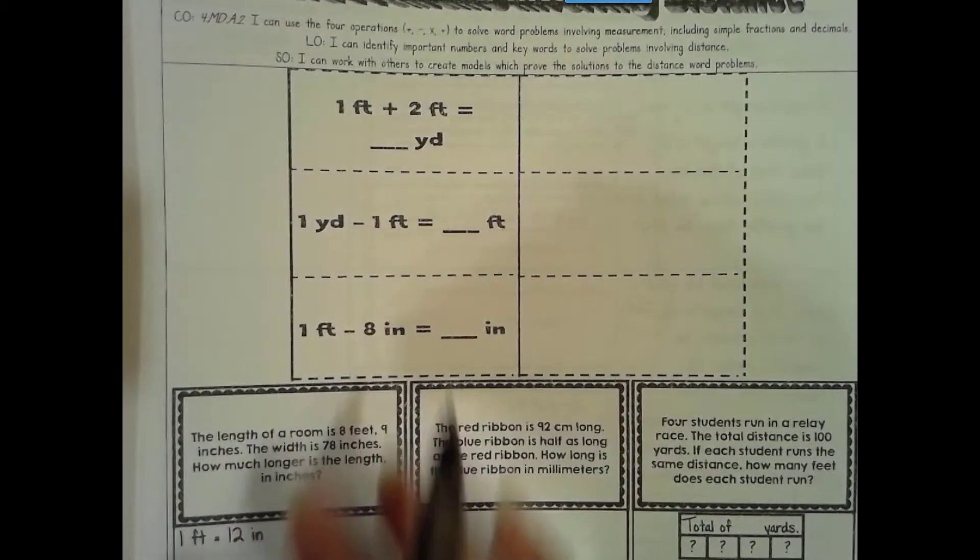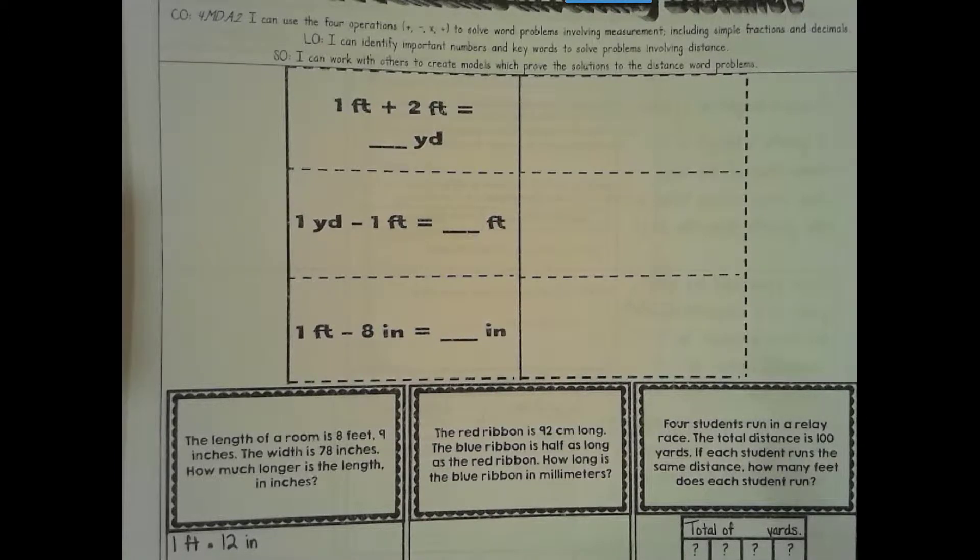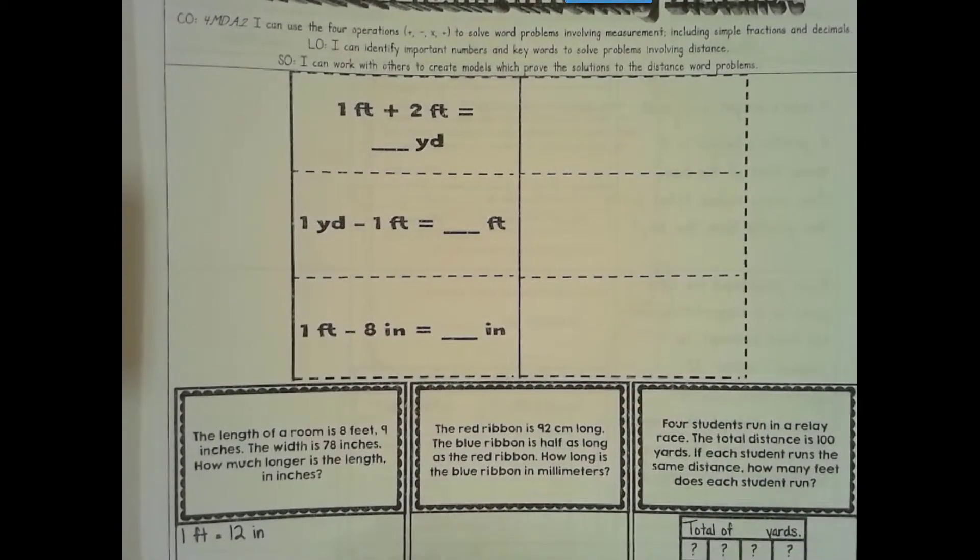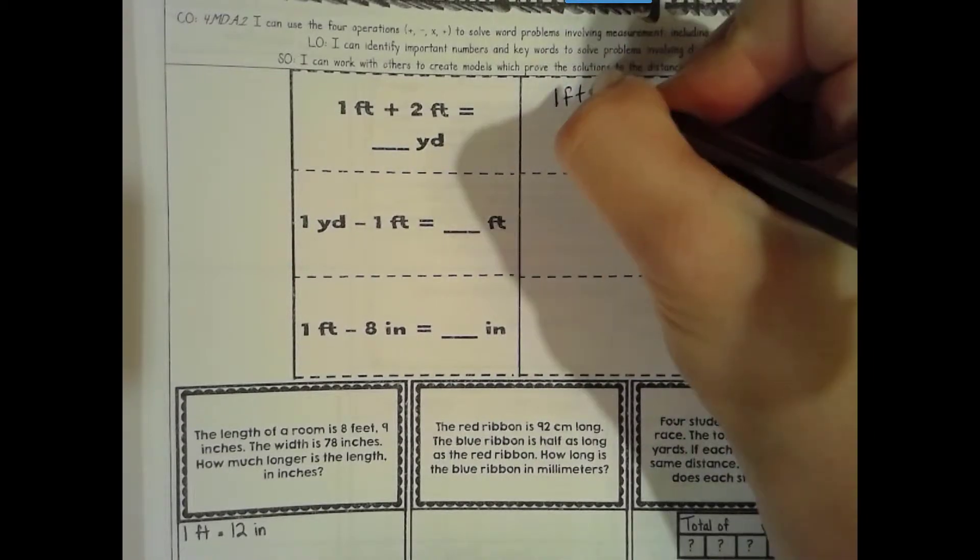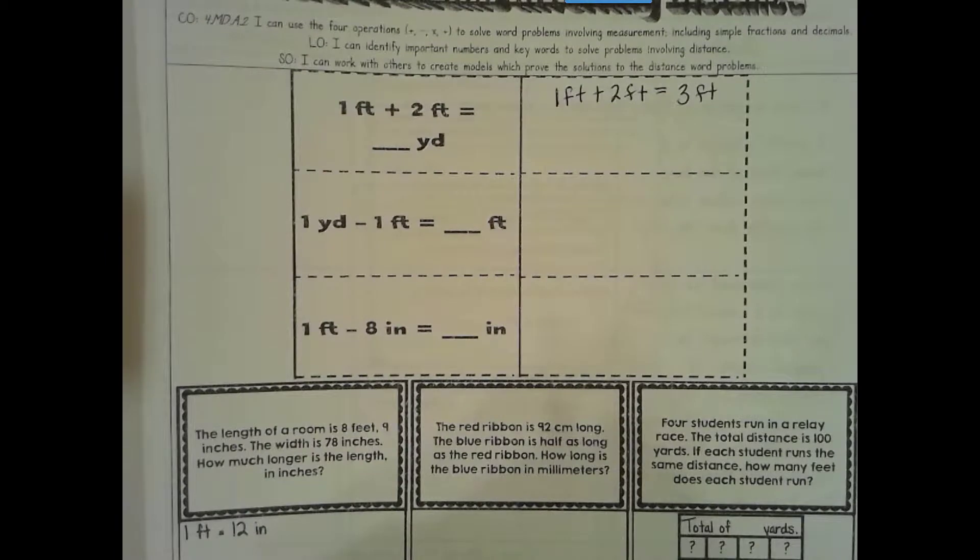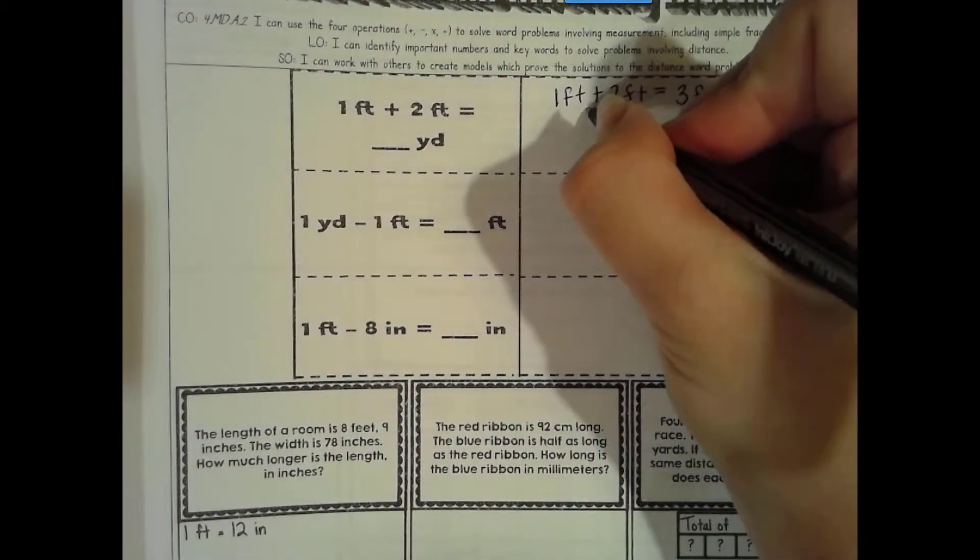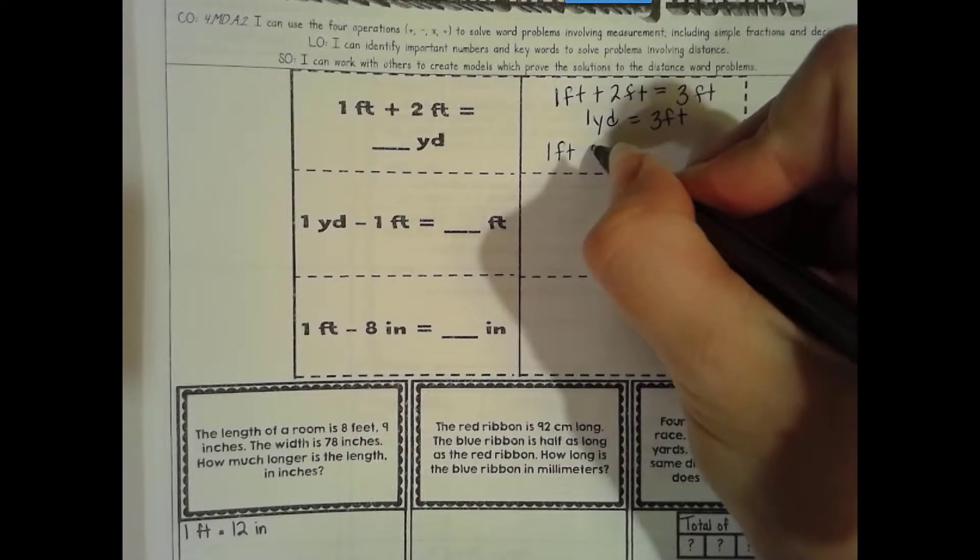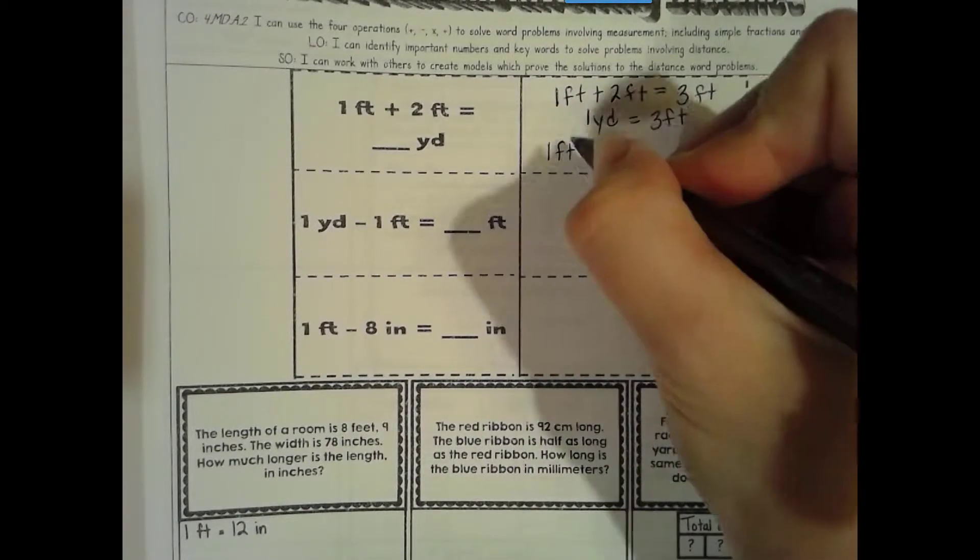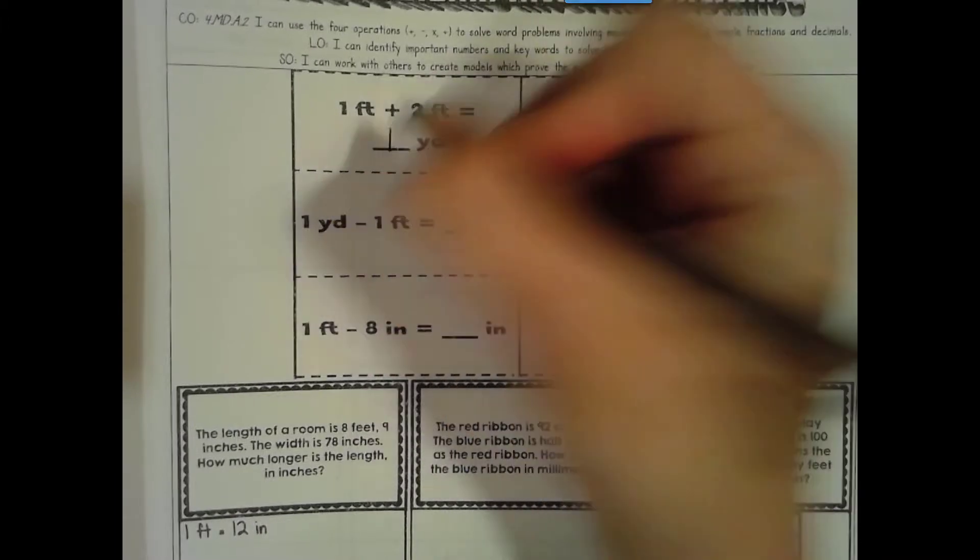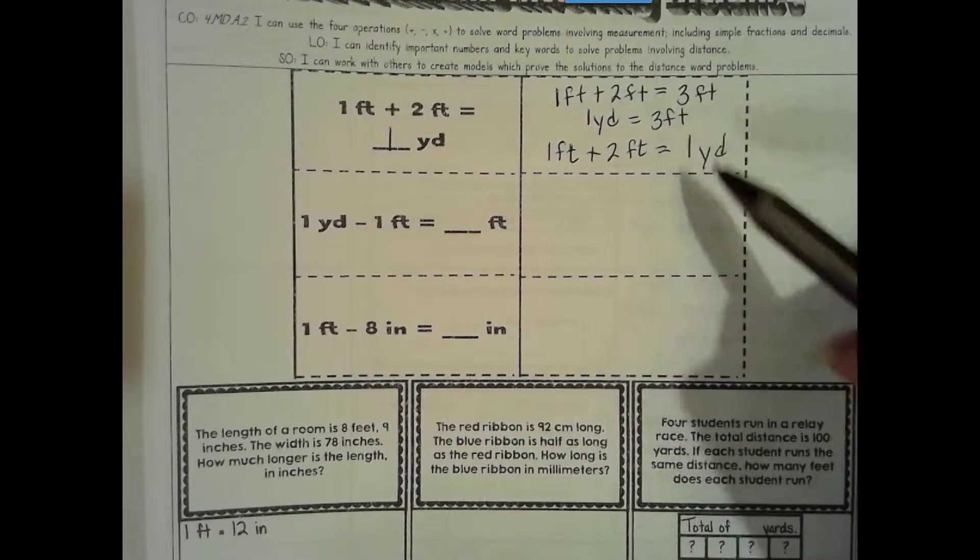Alright, so first we're going to do some practice with converting units. So here we have 1 foot plus 2 feet equals how many yards? Well, first, because these are similar units, I can just add them together. So 1 foot plus 2 feet equals 3 feet. And I know that 1 yard is equal to 3 feet. So that means that 1 foot plus 2 feet equals 1 yard. Because if this is 3 feet and 1 yard is equal to 3 feet, this equals 1 yard.